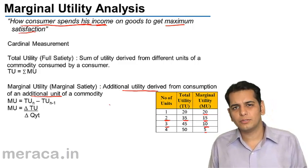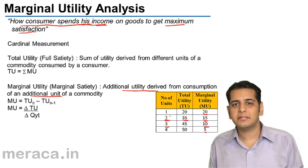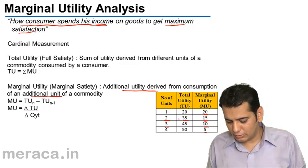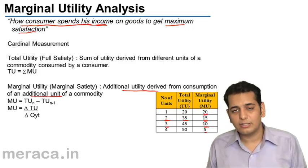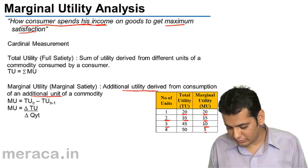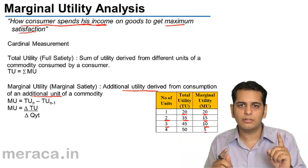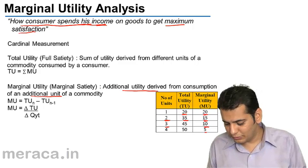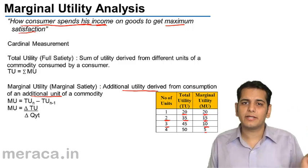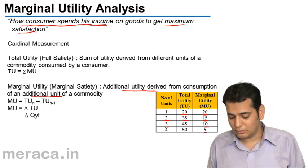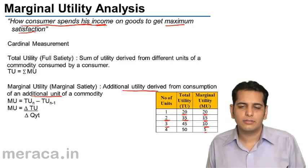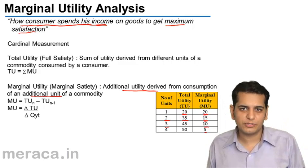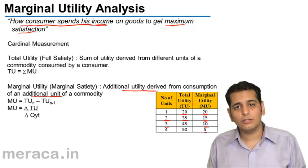What is total utility? Total utility is the sum of all the utility derived from total consumption. When you consume the first commodity, you derive a satisfaction level of 20, so the total utility derived from one unit of consumption is 20. When you consume the second ice cream, you derive a utility of 15 from it, but in total you have now derived 35 — 20 from the first and 15 from the second.